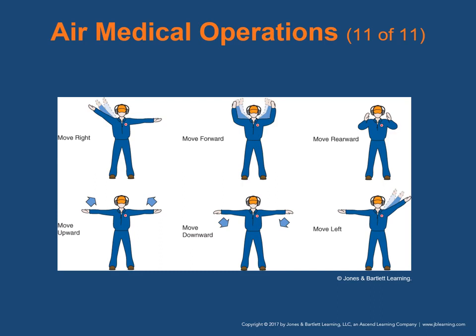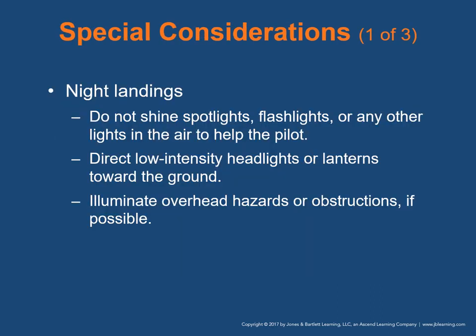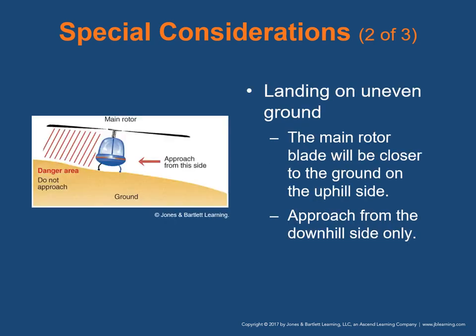For night landings, do not shine spotlights, flashlights, or any other lights in the air to help the pilot as they may temporarily blind them. Direct low-intensity headlights toward the ground at the landing site, and illuminate overhead hazards or obstructions if possible. If the helicopter must land on uneven ground, use extra caution — the main rotor blade will be closer to the ground on the uphill side and can dip as low as four feet. Approach the aircraft from the downhill side only, or as directed by flight crew.